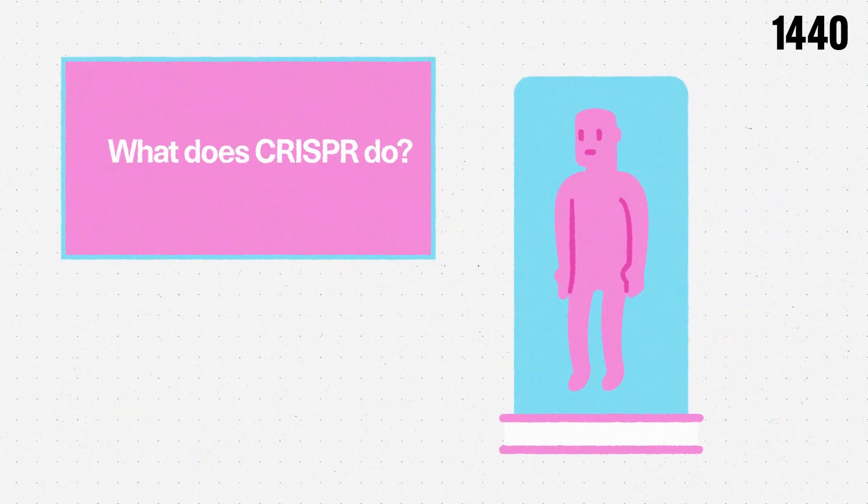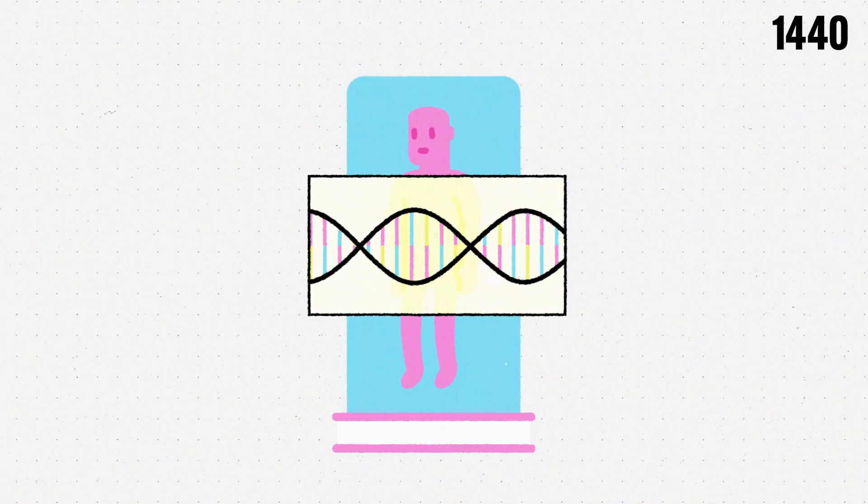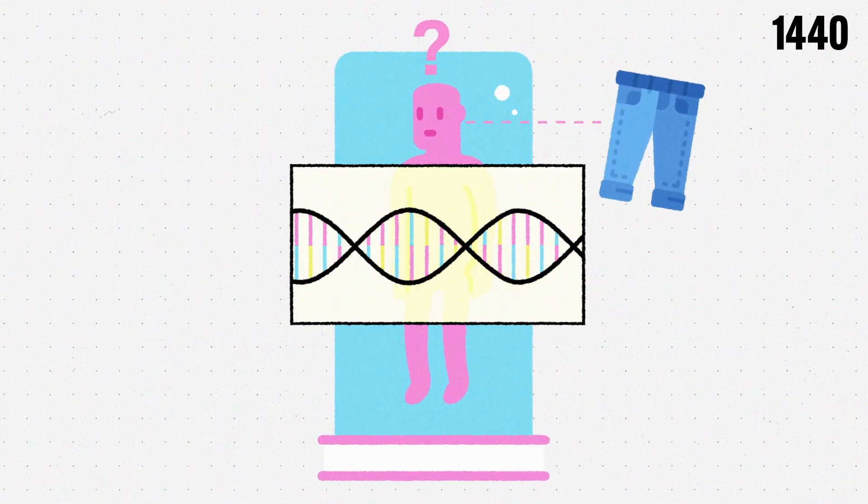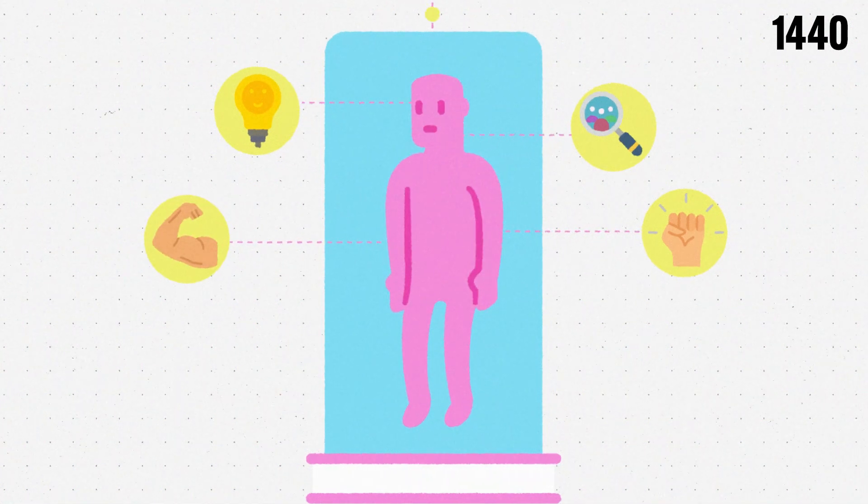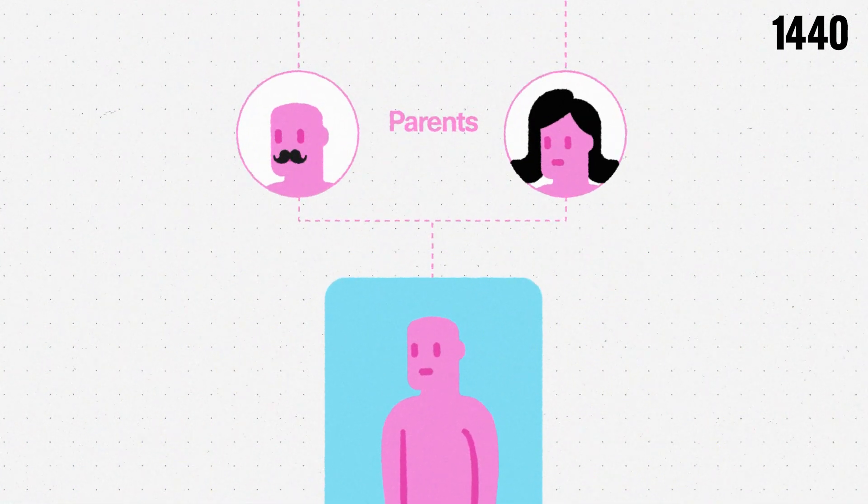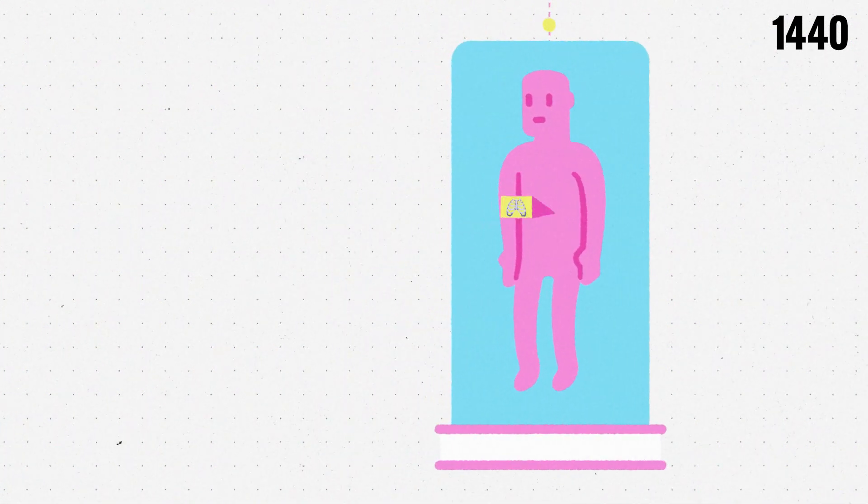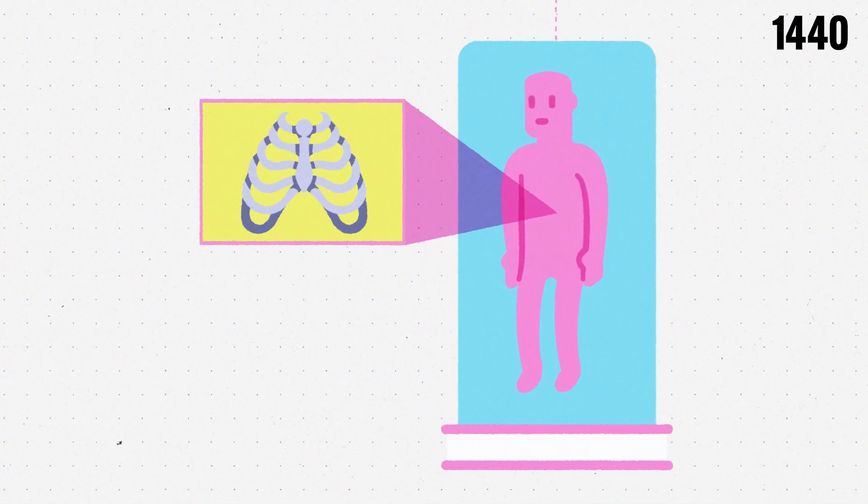To understand this, we first have to get down to our genes—not the kind we wear. Think of genes as the blueprints for what makes you, you. We get them from our parents, and they provide instructions for everything from building your skeleton to making sure your body functions correctly.